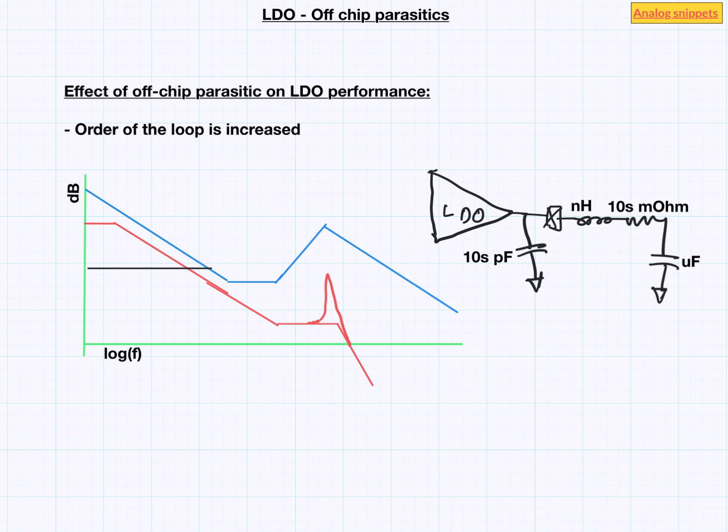Intuitively speaking at low frequency, the transient response will be determined by the LDO gain and the off chip capacitor. And it will be a good transient response. Then in certain middle band, the high impedance of inductor will cut off the capacitor from the LDO. And that will be the band when transient response will not be good. And then at even higher frequencies, this capacitor comes into the picture and transient response again becomes good.